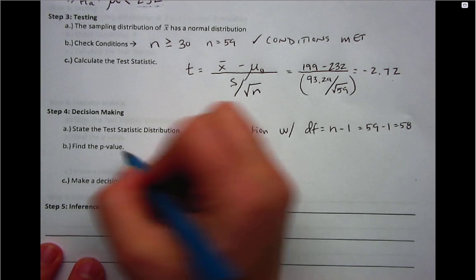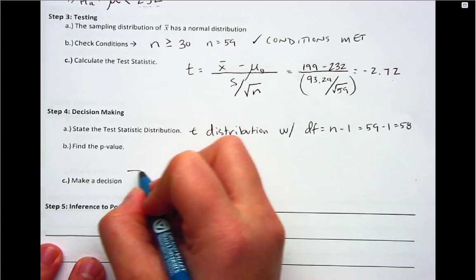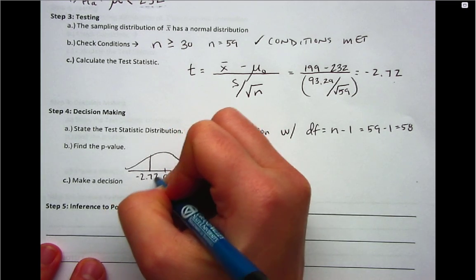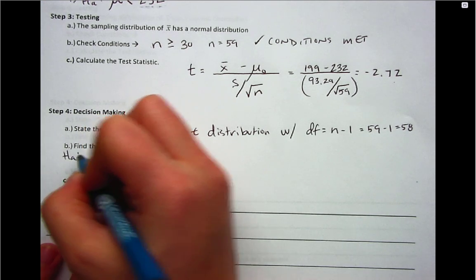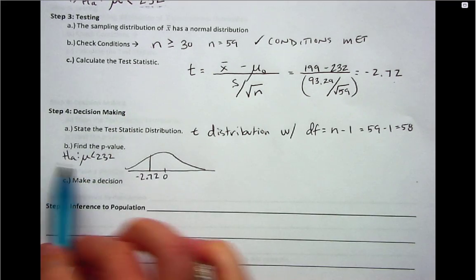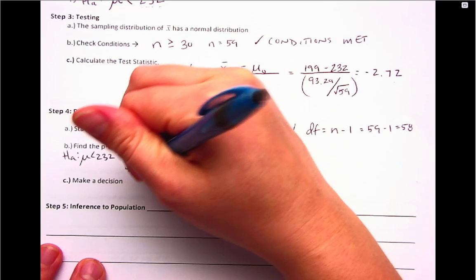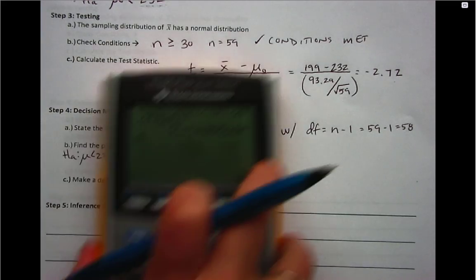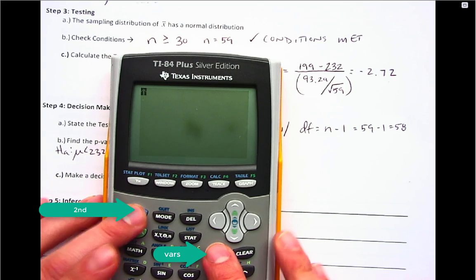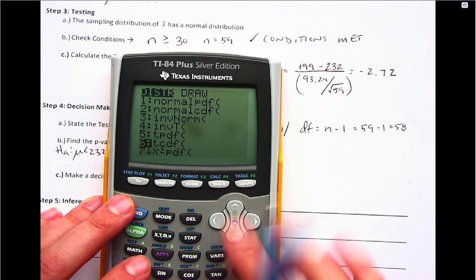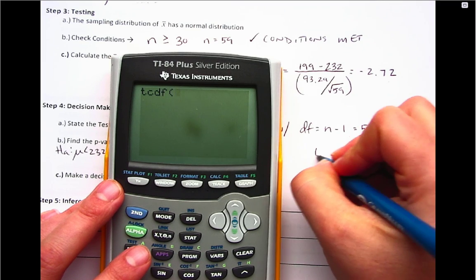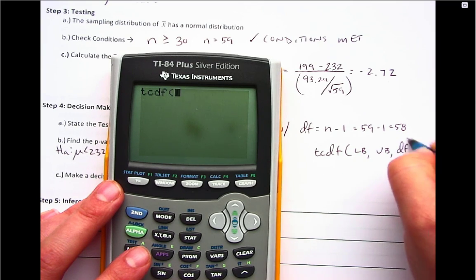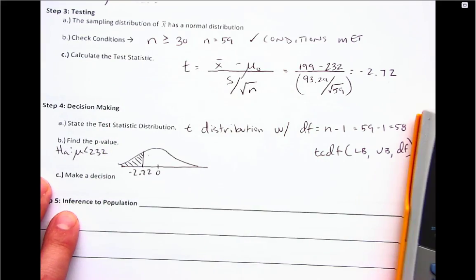Now we're going to need to find our p-value, and to do that we need information on where we are in the curve. Remember that these curves are centered at zero. Negative 2.72 would put me in this area. Then I also need information in terms of what area I'm interested in. Because my alternative is pointing to the left, or this is a left-hand test, I'm interested in the area below my test statistic. That tells me how I'm going to enter that into the calculator. Because this is a t distribution, we'll be going second, VARS, and you want t cdf. So the continuous distribution function. Then what the calculator wants from you in the t cdf is a lower bound or where the highlighting starts, an upper bound or where it ends, and then it wants you to end with degrees of freedom. Our highlighting actually starts at negative infinity.